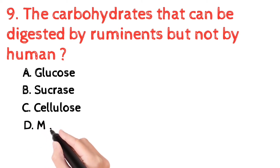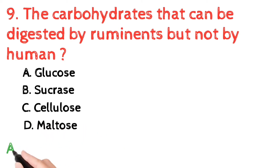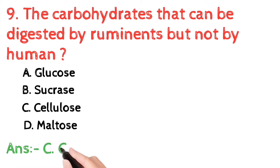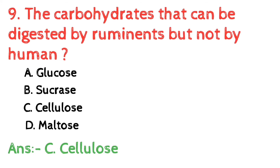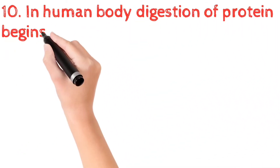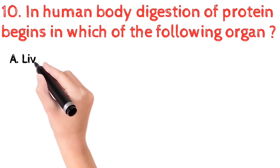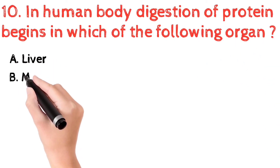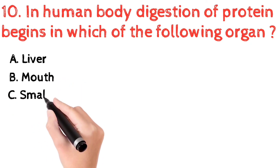Question number 9: the carbohydrate that can be digested by ruminants but not by humans — a) glucose, b) sucrose, c) cellulose, d) maltose. The correct answer is c) cellulose. Humans are unable to digest cellulose because they lack the appropriate enzyme to break down the beta-acetyl linkage. Ruminants such as cows, sheep, and goats have symbiotic bacteria in their intestines that digest cellulose.